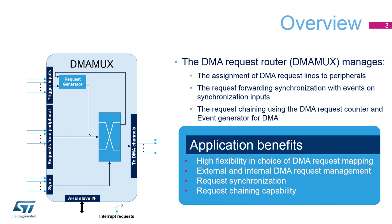Each channel selects a unique DMA request line, unconditionally or synchronously with events, from its DMA-MUX synchronization inputs. The DMA-MUX may also be used as a DMA request generator from programmable events on its input trigger signals. Request chaining capability is based on an event generated on a particular output channel that is used as an input of the request generator to activate another channel.